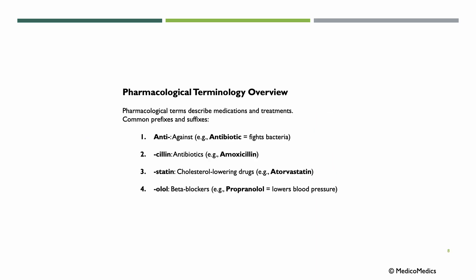Pharmacological terms describe medications and treatments. Common prefixes and suffixes include 'anti-,' meaning against — so antibiotics. Antibiotics ending with '-cillin' include, for example, penicillin or amoxicillin. Statins are cholesterol-lowering drugs. If a word ends with '-olol,' it is typically used for beta blockers — so propranolol or metoprolol.